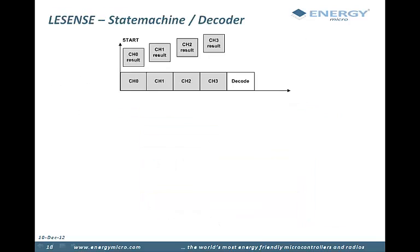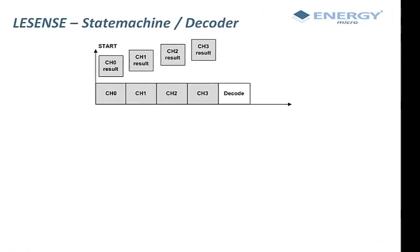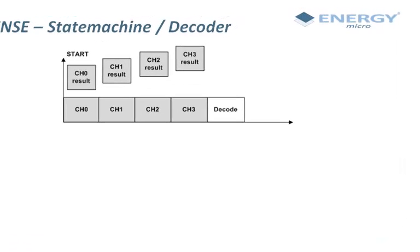How does this decoder or state machine actually work? Consider a scan period with four sensor channels enabled. At the end of every scan cycle, a decode step is added.